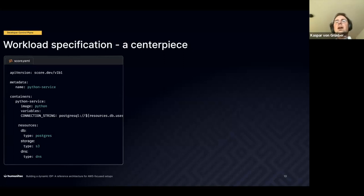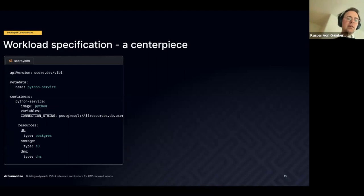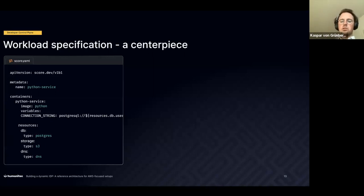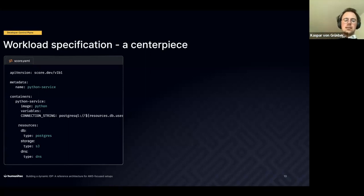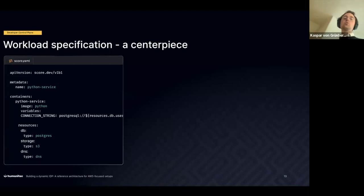In this example, a Python service depends on a resource of type database Postgres, storage S3, and a type DNS, with a connection string telling the workload how to connect to the database. This is how the score file looks — it's not 'I depend on that particular RDS database,' but rather 'I depend on a database of type Postgres.' There is exactly one score file, one workload specification. You can use SCORE or anything else — many enterprises have their own version of this.